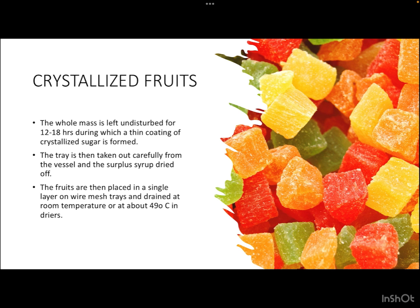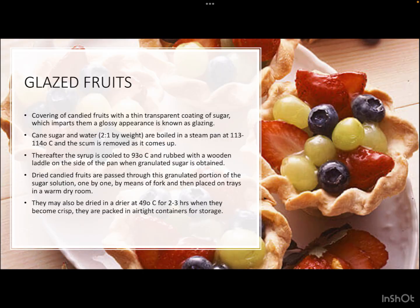This whole mass is left undisturbed for 12 to 18 hours, during which a thin coating of crystallized sugar is formed. The tray is then carefully taken out from the vessel and the surplus syrup is dried off. The fruits are then placed in a single layer on wire mesh trays and dried at room temperature or at about 49 degrees Celsius in dryers until they attain the desired moisture content.